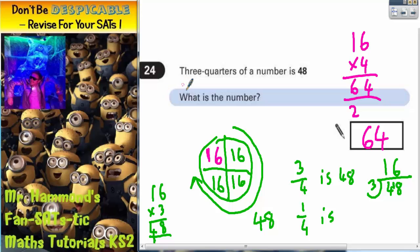It's always a good idea just to double check that that fits in with the question. So three quarters of a number is 48. We're saying that that number is 64. Is three quarters of 64, 48?